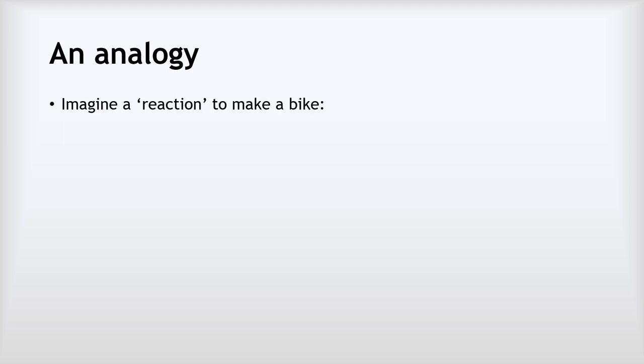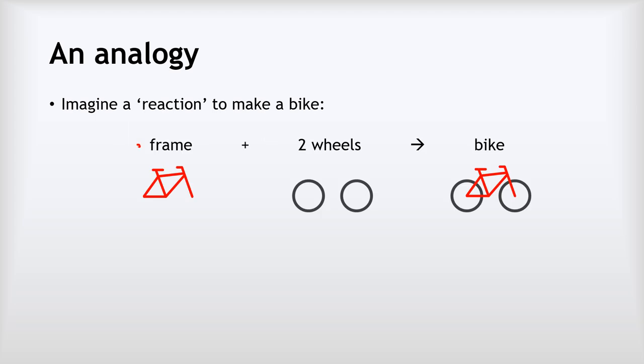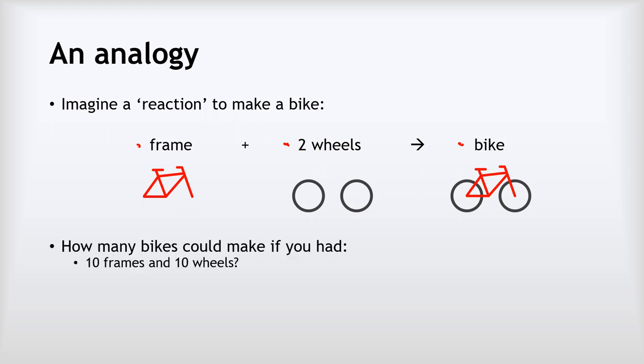To help us understand the maths of limiting reactants, it's worth thinking about an analogy. We're going to imagine a reaction to make a bike, where one frame and two wheels react together to make one bike. So the question is: how many bikes could you make if you had ten frames and ten wheels? If you think it through, you'll probably conclude that you can make five bikes.